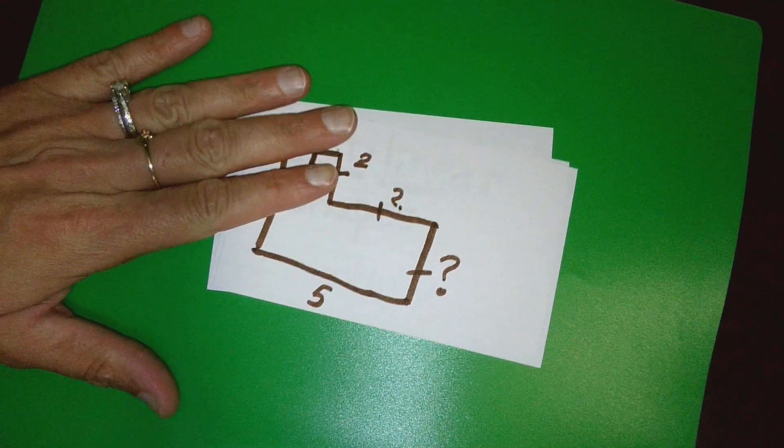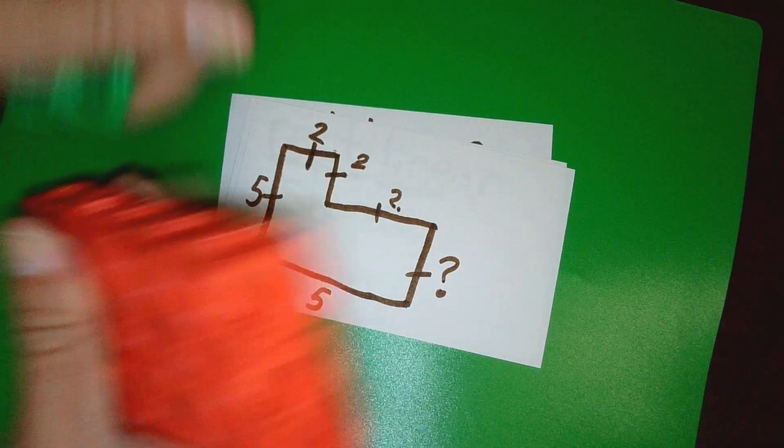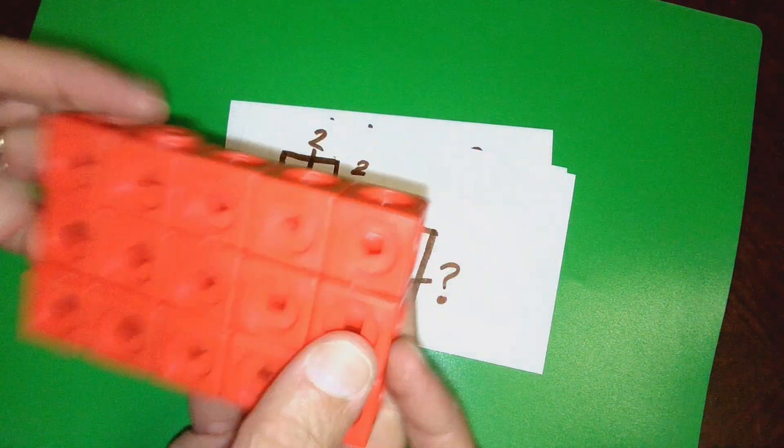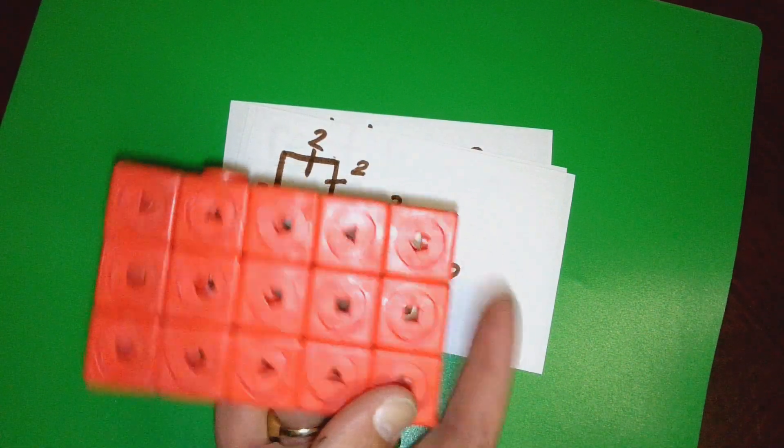Well, in a rectangle, the top and bottom are always what? The top and bottom are always equal. The two sides are always what? They're always equal.